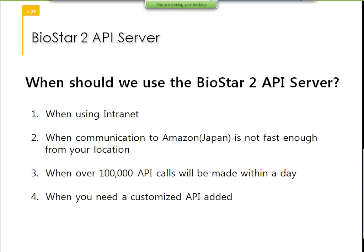When should you use the Biostar 2 API server? First, when you're using an intranet. Second, when communication to Amazon Japan is not fast enough from your location. Third, when you need more than 100,000 API calls within the same day. Fourth, when you need a customized API. We are trying to add new APIs with each new version release. In version 2.4, there are some new APIs related to retrieving logs, which was quite difficult with the previous API. We're trying to improve the API, and maybe in the next version there's going to be a big update on the web API so you'll be able to do most things done through the Biostar 2 software.